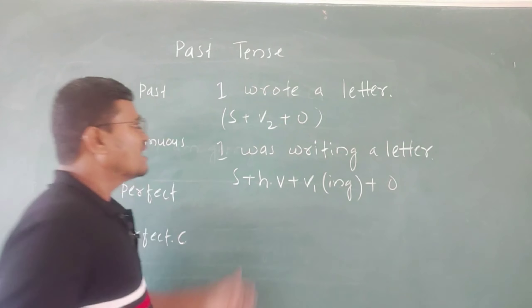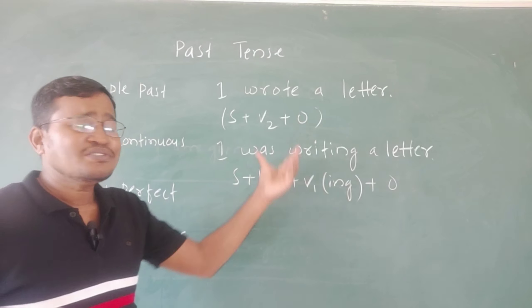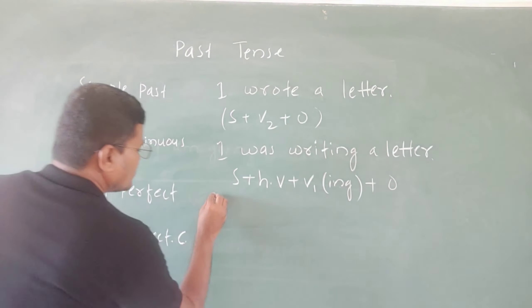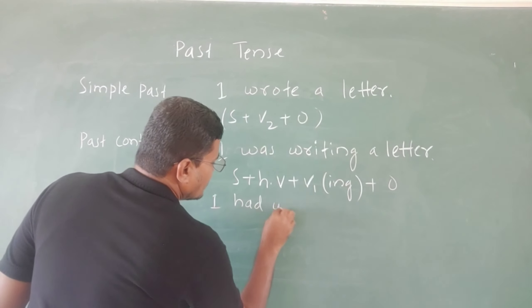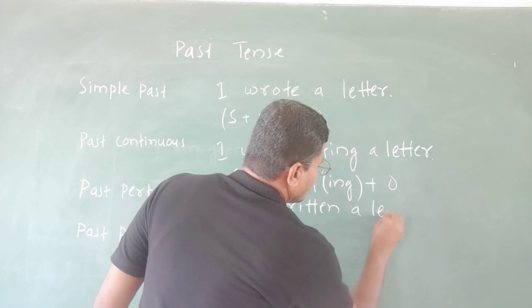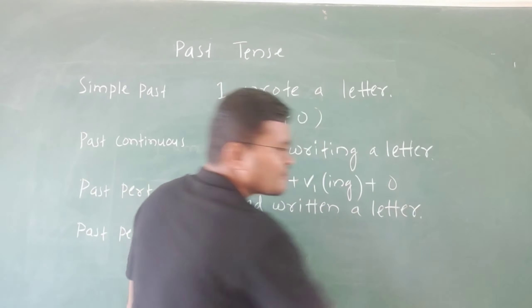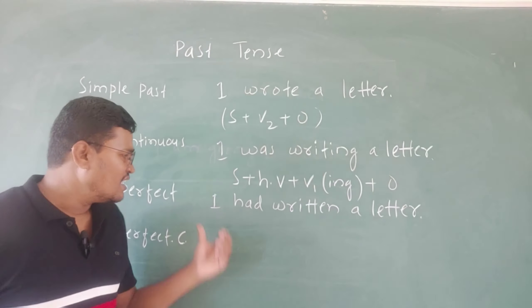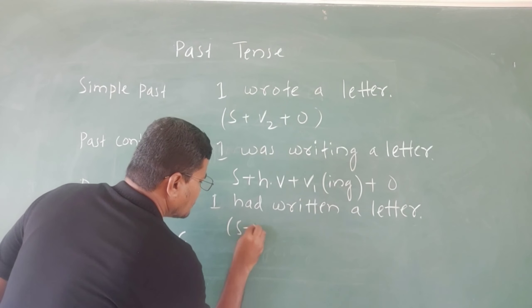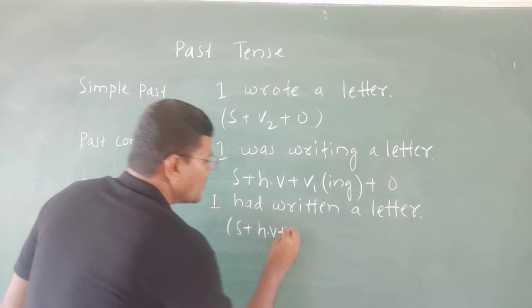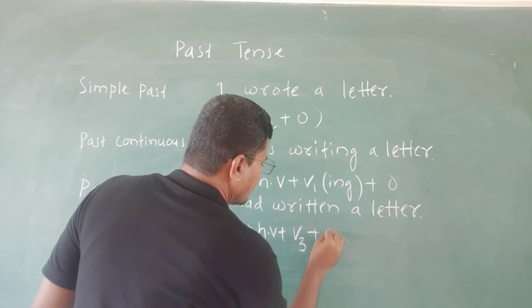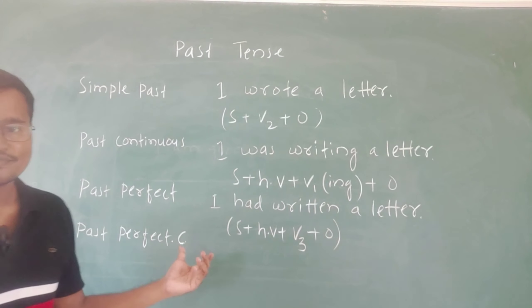'I wrote a letter', 'I was writing a letter', and third one is past perfect: 'I had written a letter'. Note, 'I had written a letter' - you need subject plus helping verb plus V3, then finally the object.